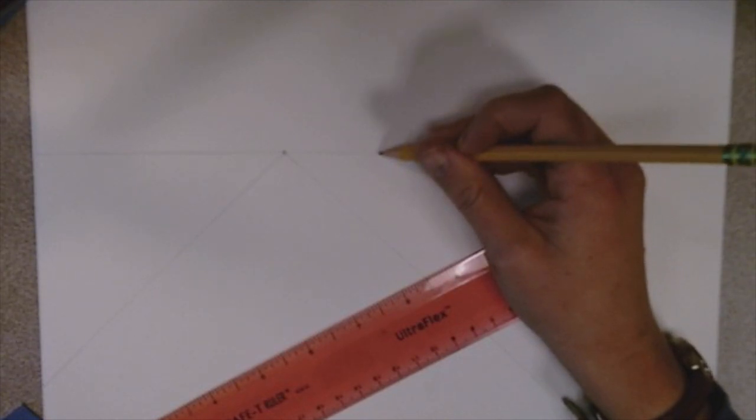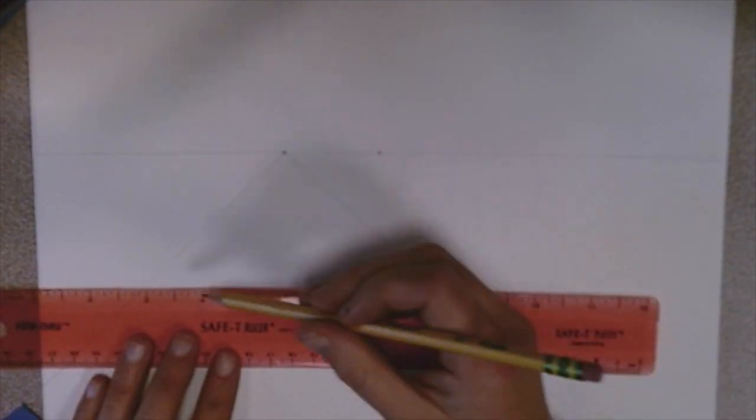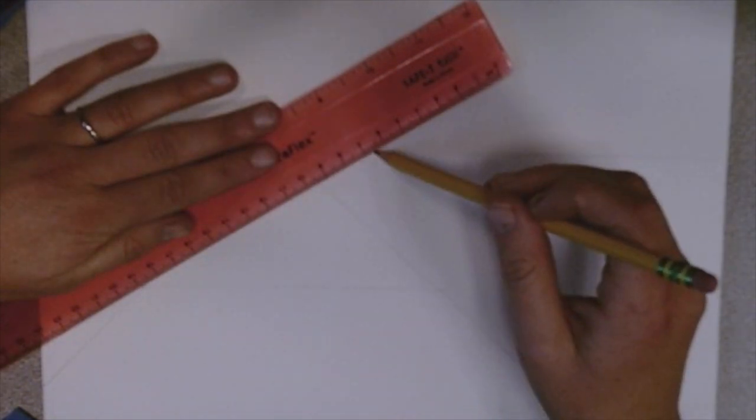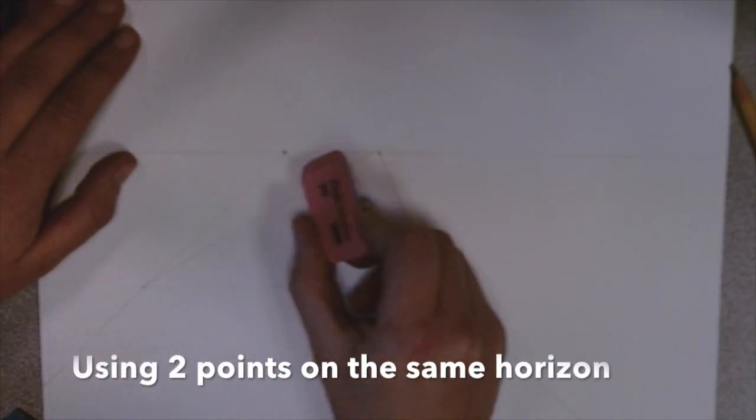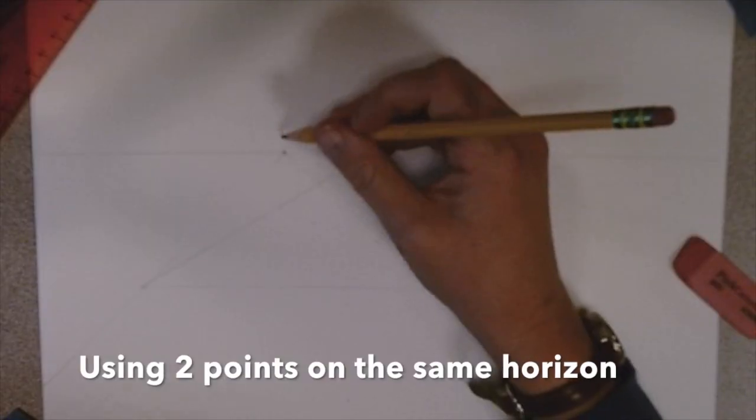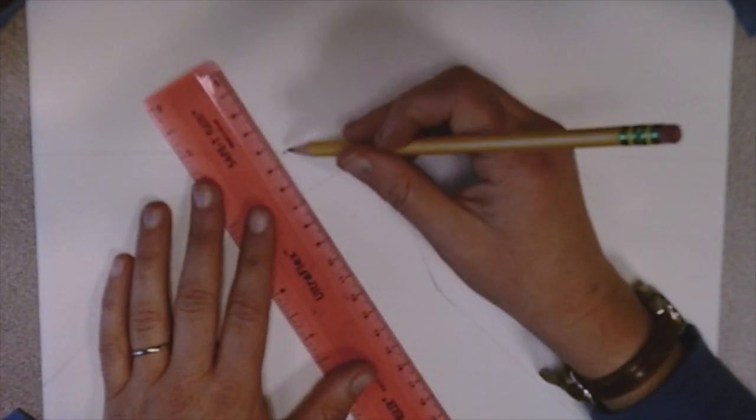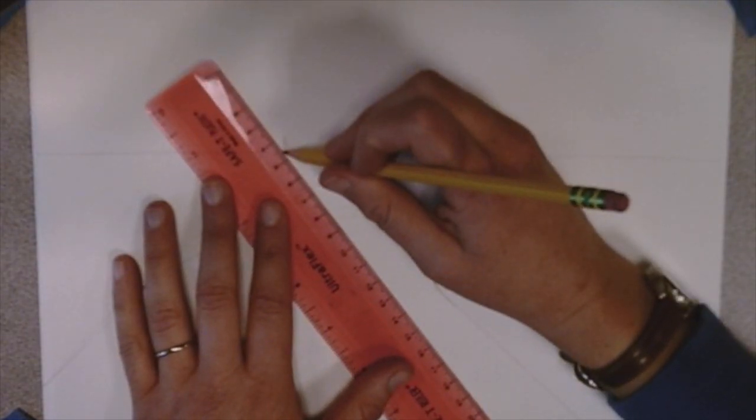This is going to become the road and we're drawing a second vanishing point here. That second vanishing point is to try and get the curve in the road. So the bottom half of the road goes to point number one and the top half of the road goes to the second vanishing point.